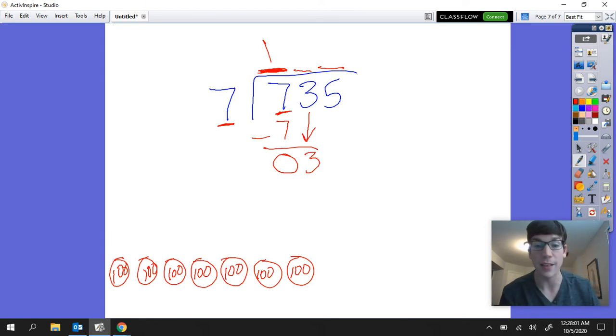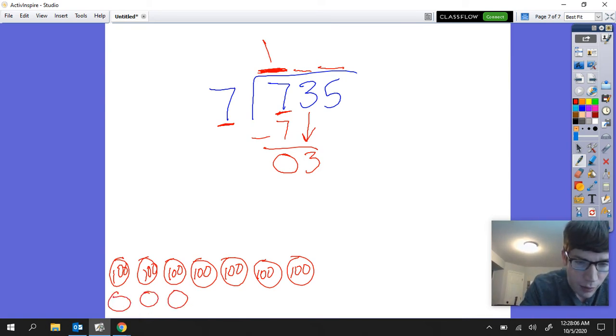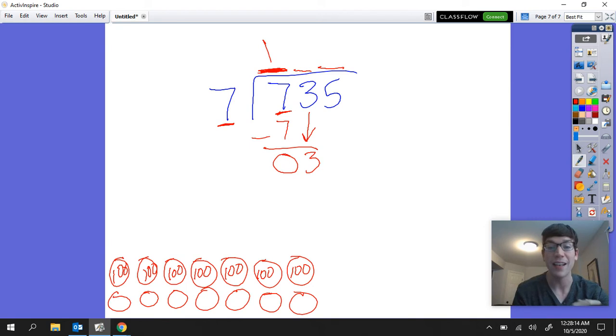So now we're working in the tens place and we're going to ask ourselves, I'm going to draw seven new groups. Remember these groups already have 100. At this point I'm asking myself can I put a 10 in each group? Well I have three tens and I have remember seven groups. If I were to put a 10 in each group, if I were to put a 10 all the way across that would be 70: 10, 20, 30, 40, 50, 60, 70. If I put a 10 in each group, which means I do not have enough to put a 10 in each group.